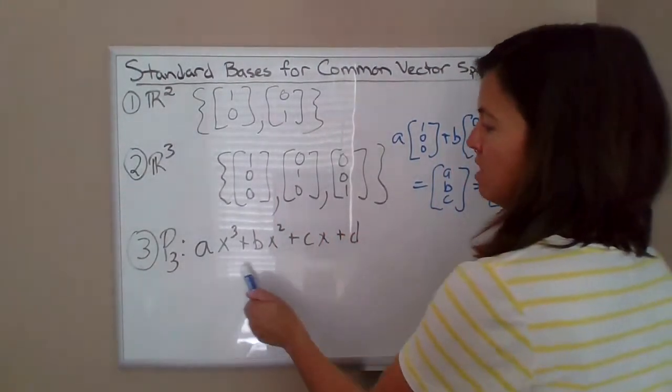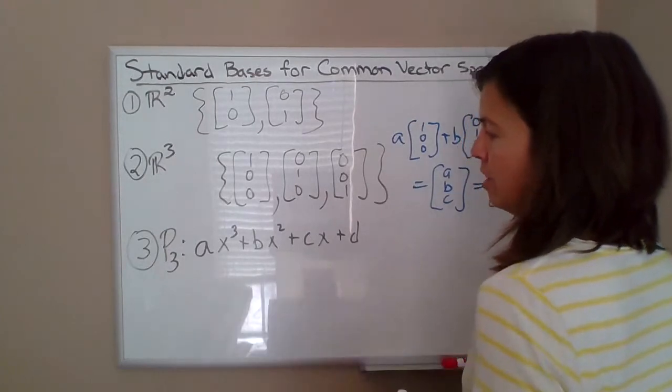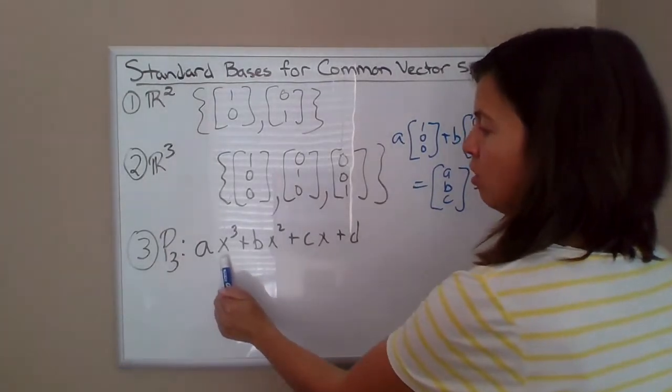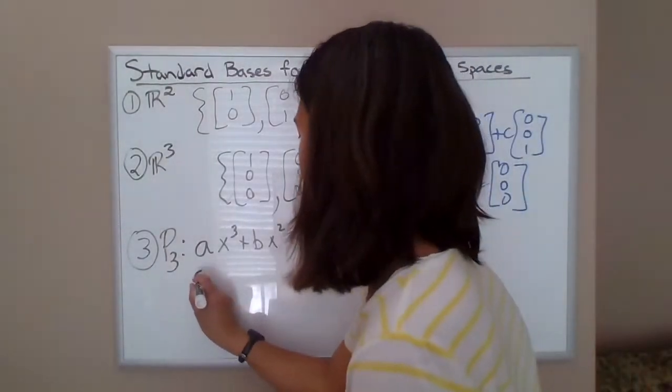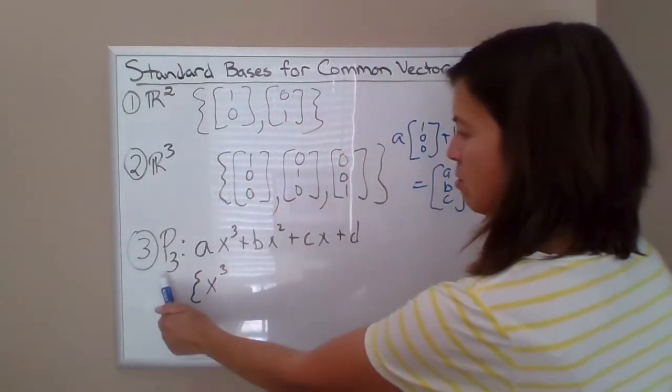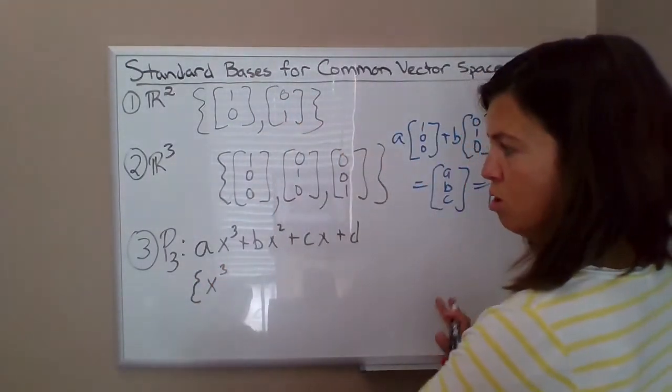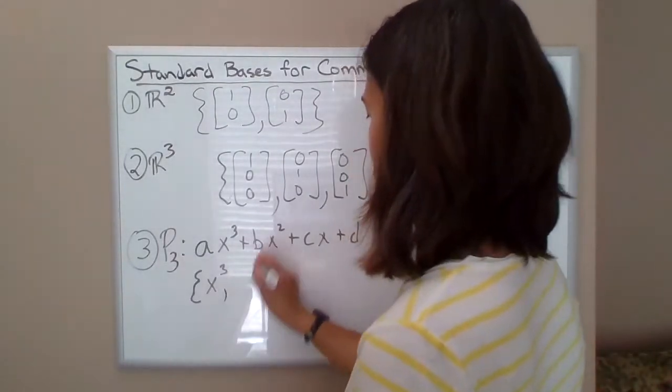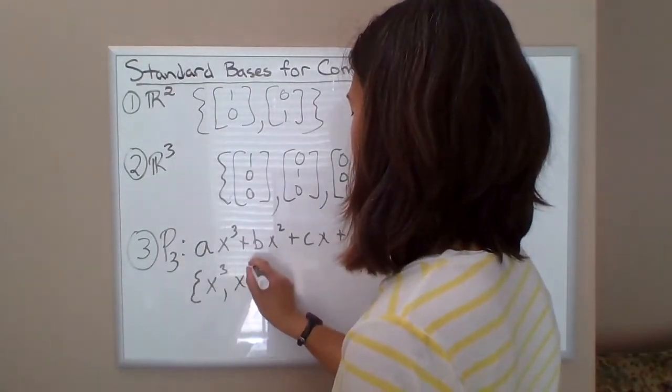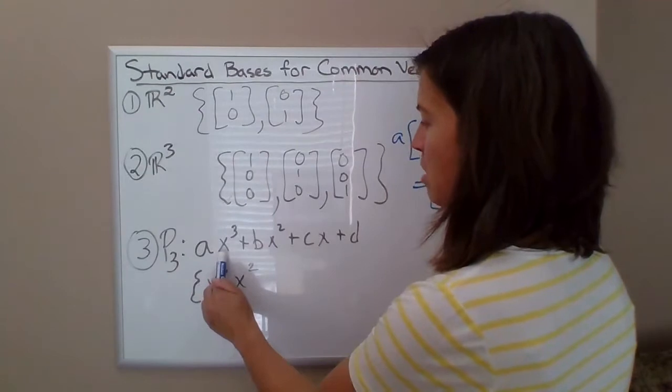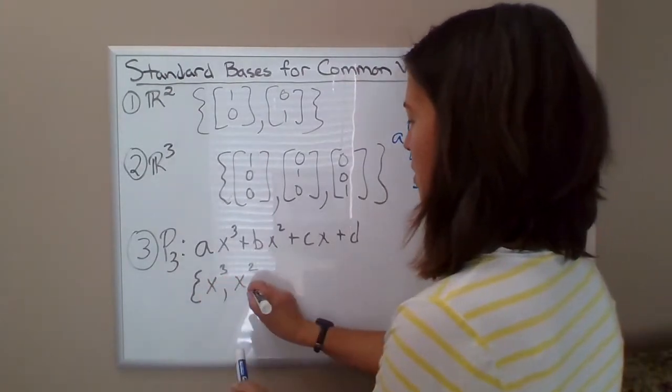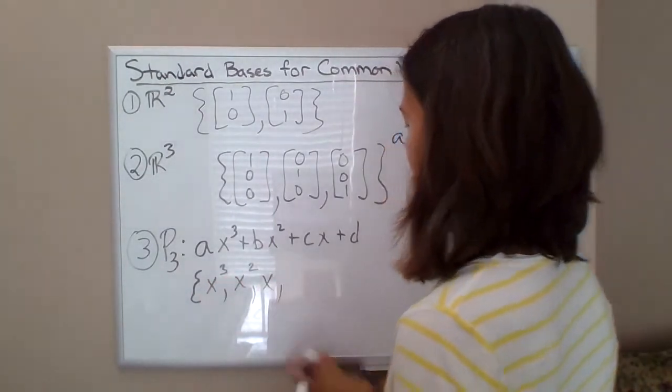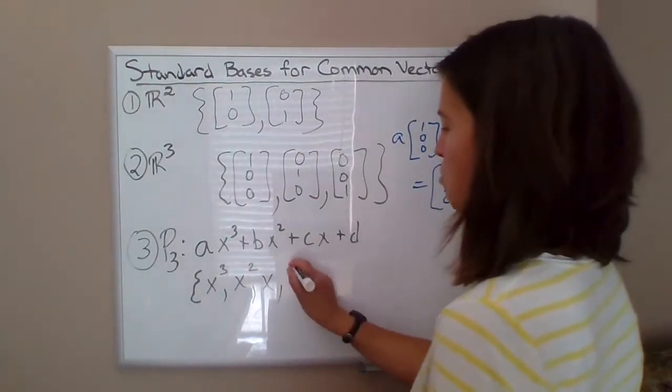So anything in P³ is going to have this form, which is a scalar times X cubed and just X cubed on its own. I mean, that's a polynomial in P³. Just Y equals X cubed. Same with Y equals X squared. But so you've got some scalar times X cubed plus some scalar times X squared plus some scalar times X to the first, plus, let's say this is D times one.